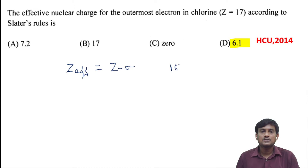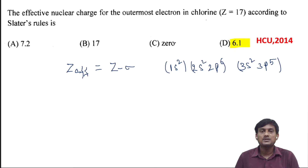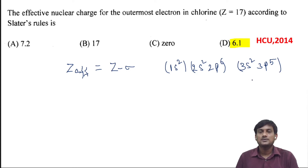The electron configuration of chlorine is: 1s², 2s², 2p⁶, 3s², 3p⁵. We have to divide the same orbit. Next, we have to find out to which electron we need to calculate the effective nuclear charge — we have to find out the outermost electron.